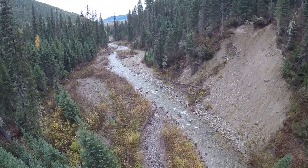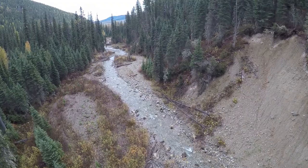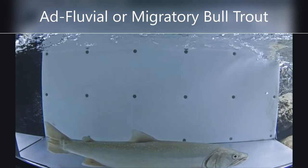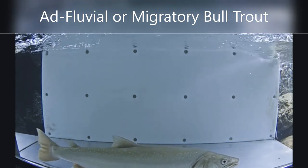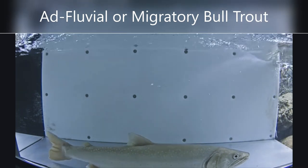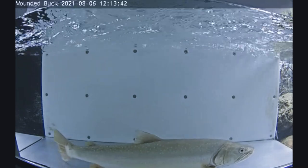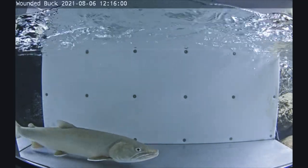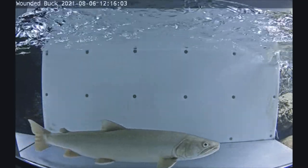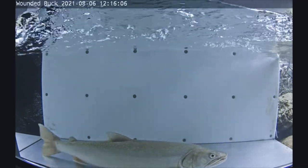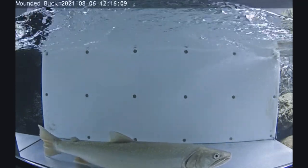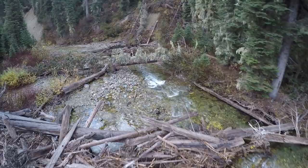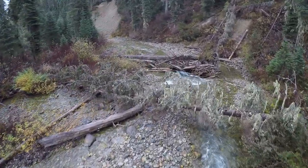Bull trout exhibit multiple life history forms that contribute to a single population, including adfluvial, fluvial, and resident life history types. Contributions of variable life history forms are unknown, but through fishery sampling, our study population shows predominantly adfluvial or migratory life history. Migratory bull trout remain in natal streams for one to three years before migrating to a lake or ocean, ultimately returning to their natal stream to spawn.